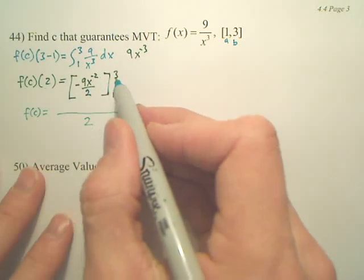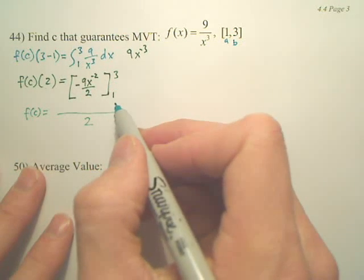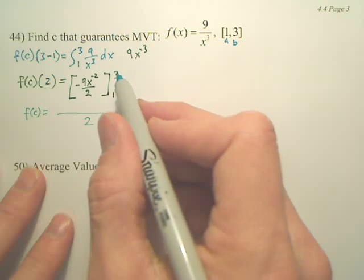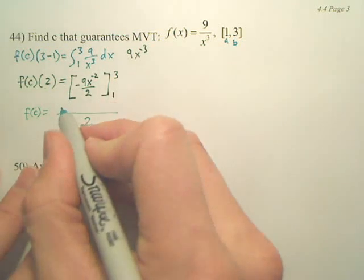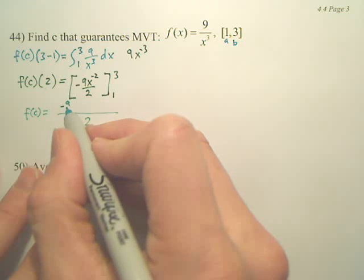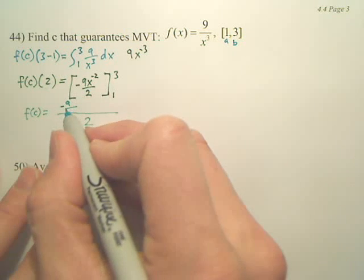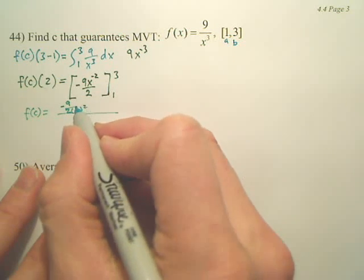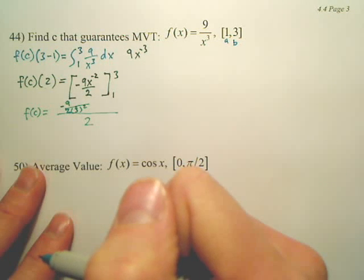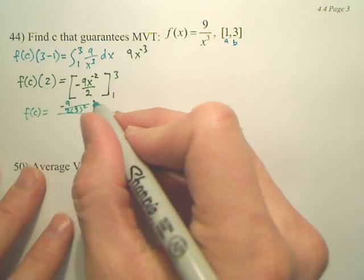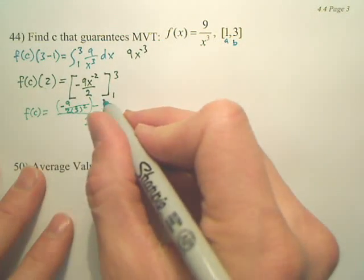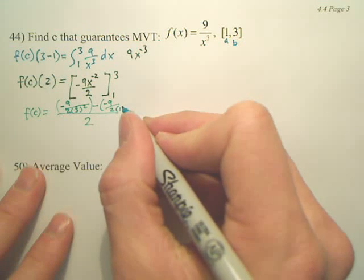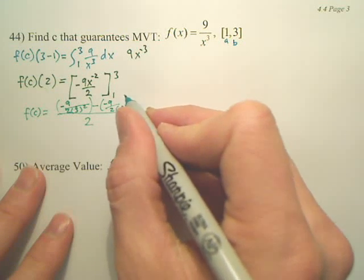Now, I first plug in 3 or 1. It's F of B minus F of A, so you start with the top one. So you first plug in 3, so it's going to be negative 9 over 2 times 3 squared, kind of small sorry, minus, that's the first piece, negative 9 over 2 times 1 squared.